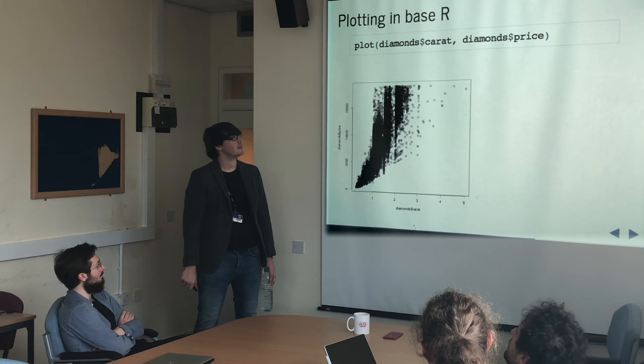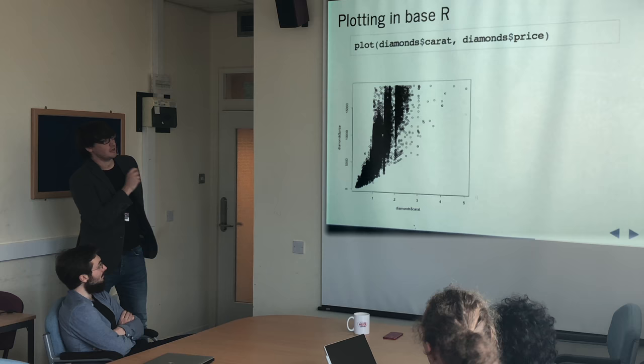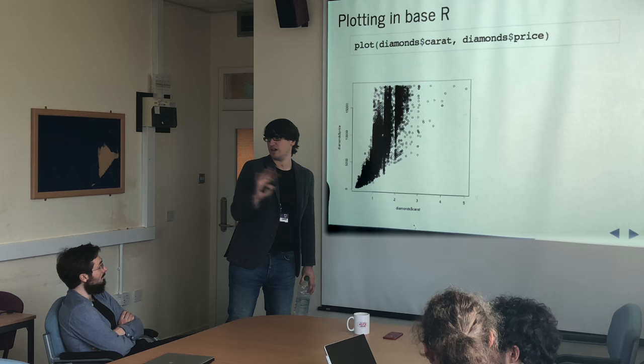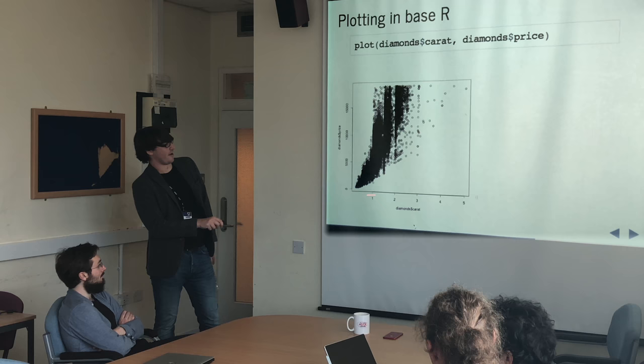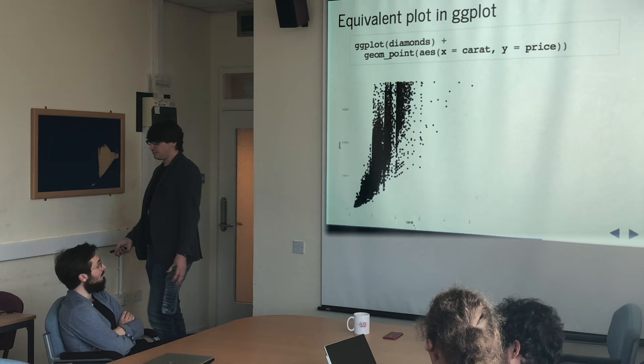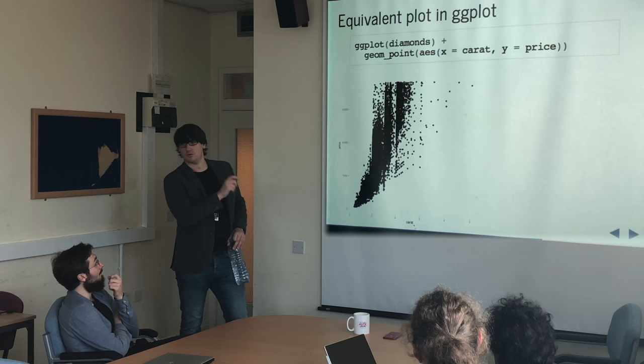Has anyone used ggplot? The idea behind ggplot2 is it's a way of giving more control over the way you're plotting things. Diamonds is another dataset which comes with ggplot2 — basically the price and details of 150,000 diamonds. If you throw this at base R, you can say plot these two columns, and it will do this scatter plot — which isn't very useful but shows that as the carat increases, the price increases. To do that in ggplot2, we pass the dataset to the ggplot function, say I want this in points, and specify x and y as the two columns.